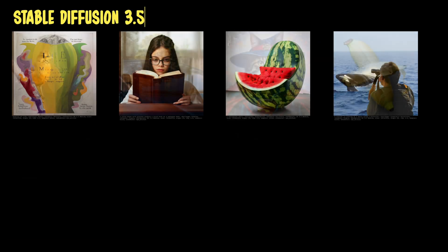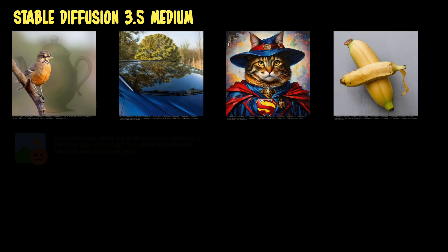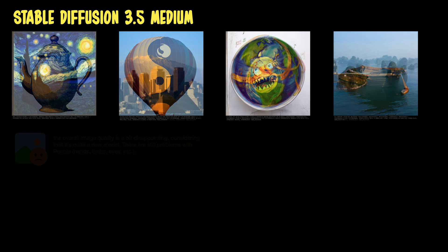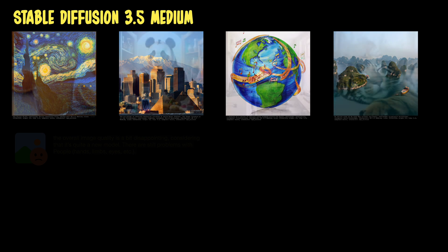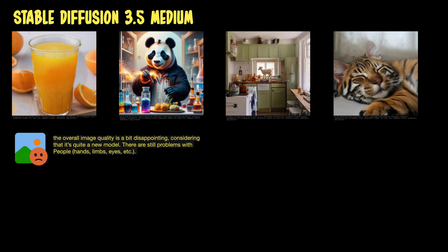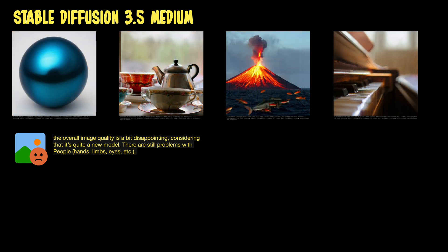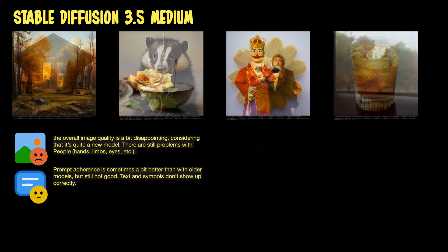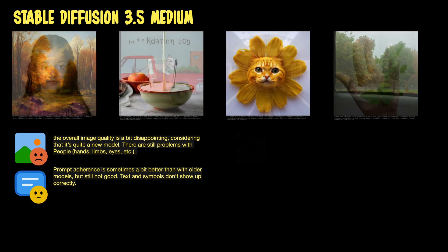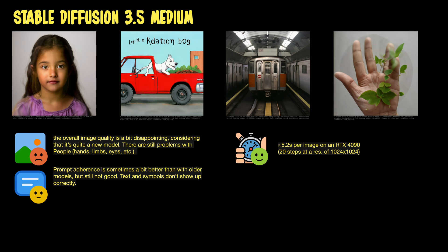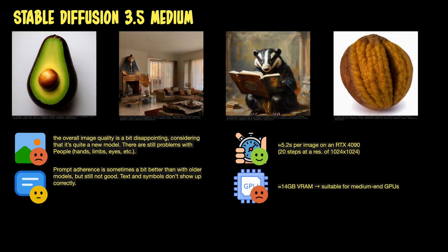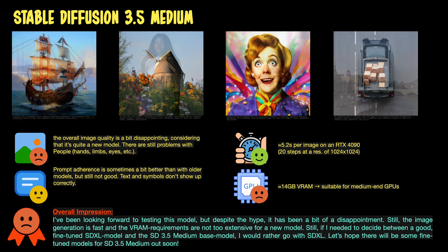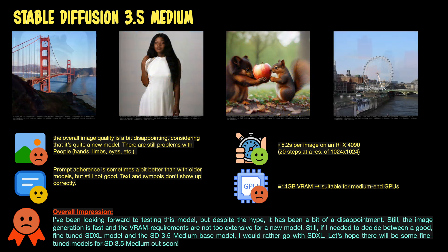Now let's take a look at the new Stable Diffusion 3.5 family by Stability AI, starting with their medium model. Like Flux.1, these are base models, so maybe we can expect some fine-tuned models with even better quality over time. To be honest, I've been a bit disappointed by the image quality of this model — still the same old problems with fingers and hands, and the overall impression wasn't as good as expected. The prompt adherence is a bit better than in older models, but it still has significant problems with rendering text and symbols. It takes about 5.2 seconds to render an image at 20 steps on an RTX 4090 and about 14GB of VRAM, so it's not really suitable for lower-end machines. In my view, it doesn't bring much advantage compared with SDXL or Flux.1 Schnell. Hope there will be some better fine-tuned models out soon.